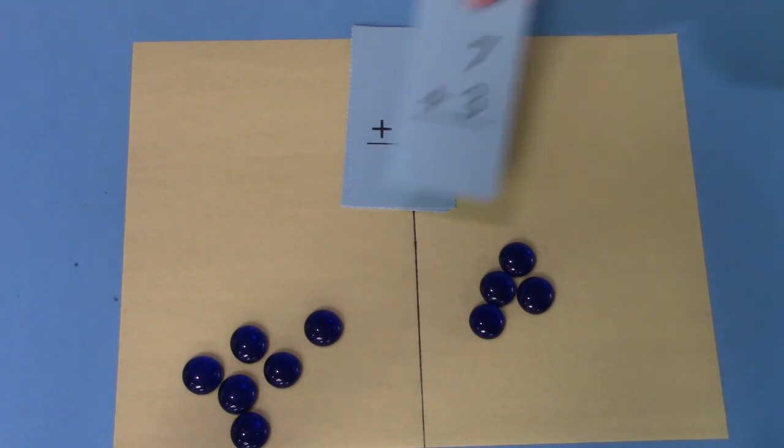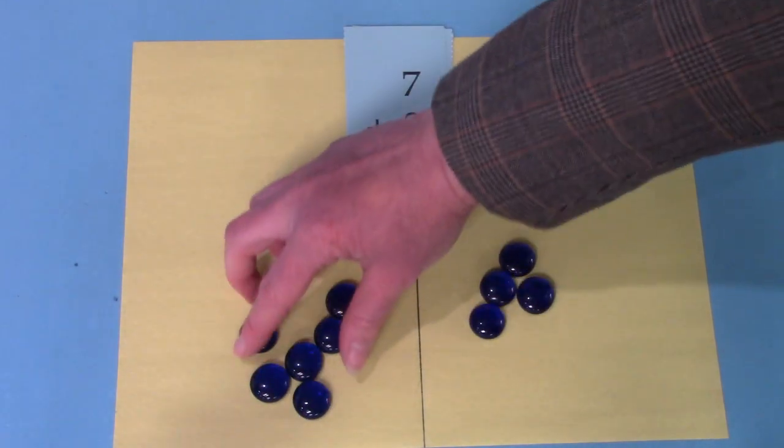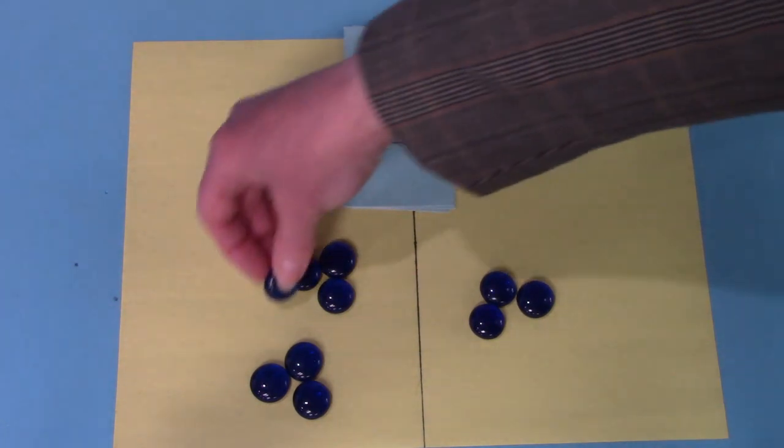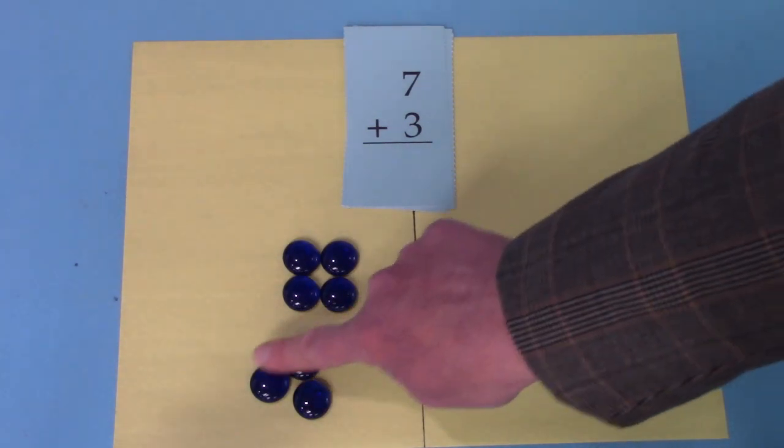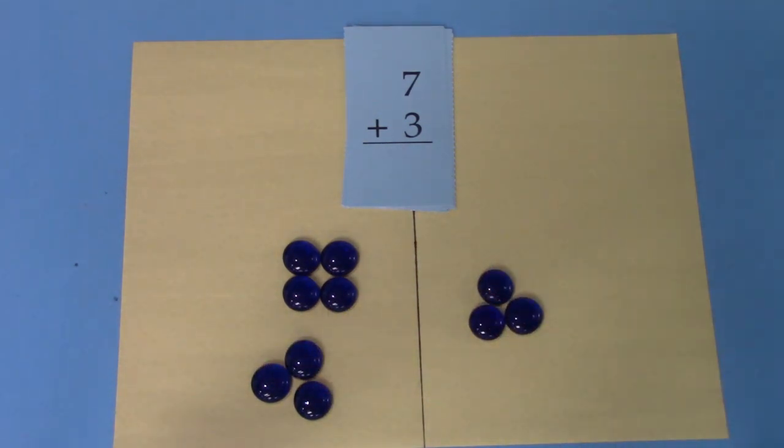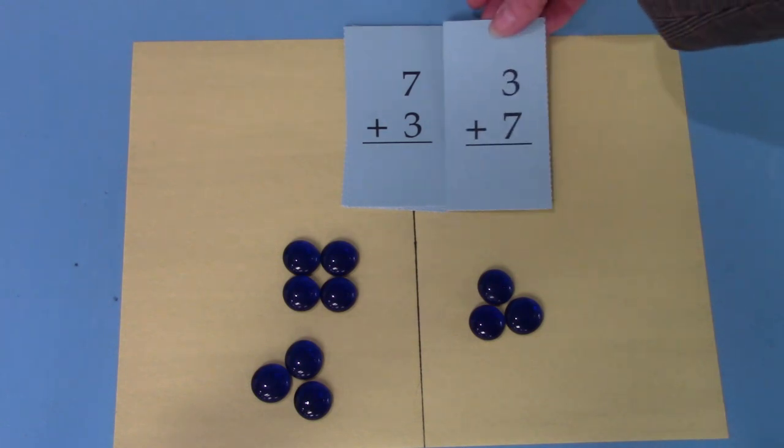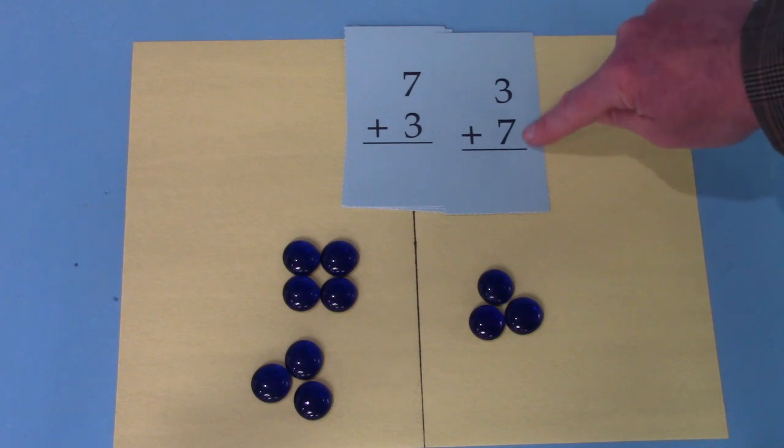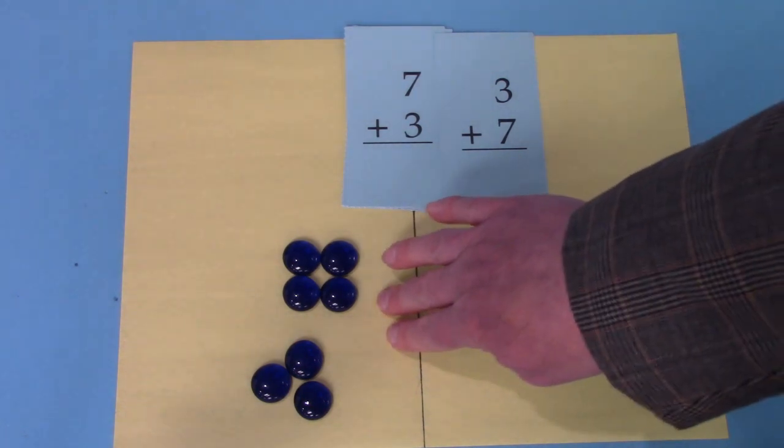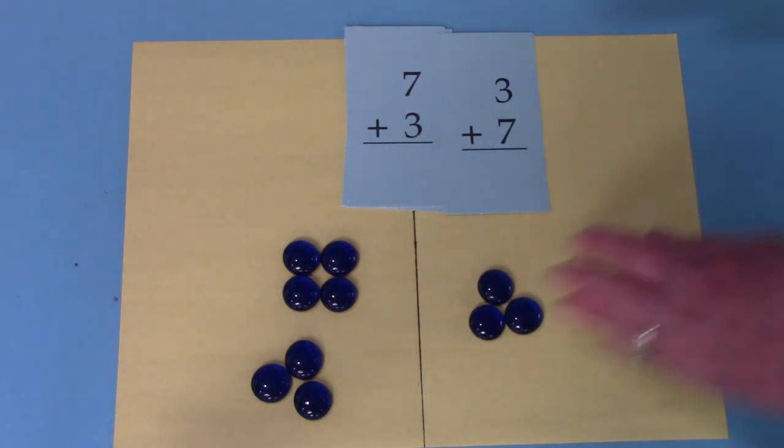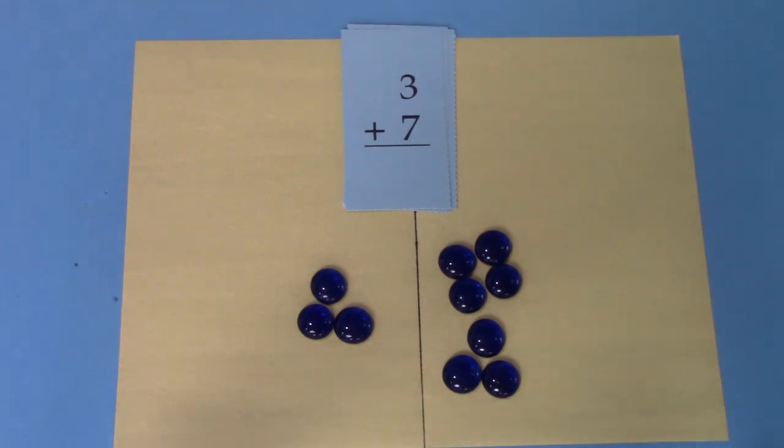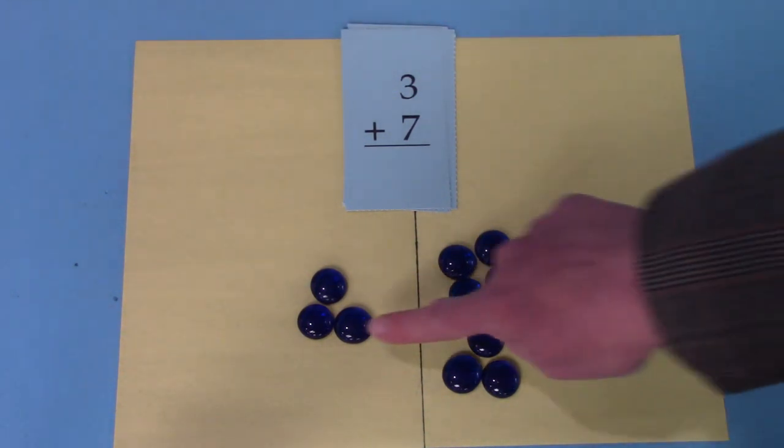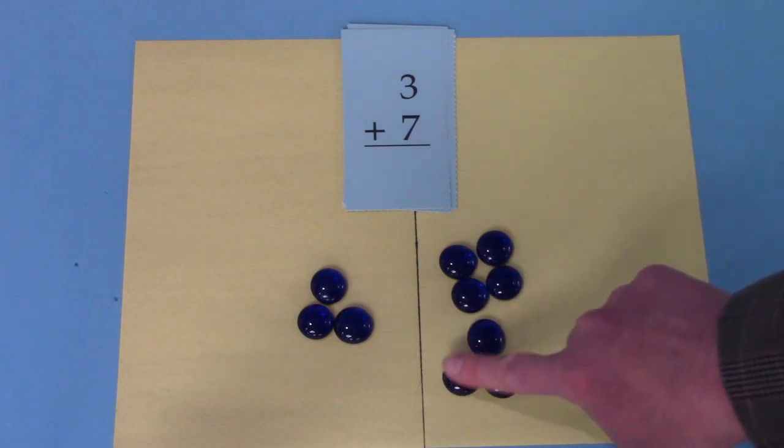Well, what about seven plus three? We need to move one of these over to make this side a seven. And then we have three. Four, five, six, seven, eight, nine, ten. There's a switcheroo fact that goes with that one. Seven plus three and three plus seven both have the sum of ten. It doesn't matter if we have the seven on this side and the three on this side or if we go switcheroo and show three plus seven. It's still going to total ten. Three, four, five, six, seven, eight, nine, ten.